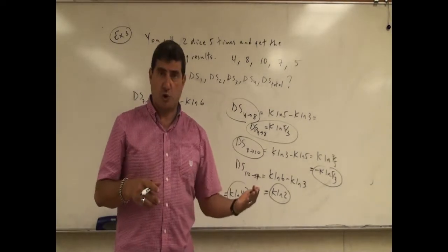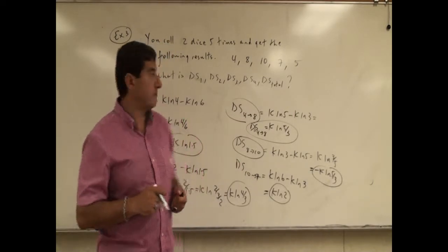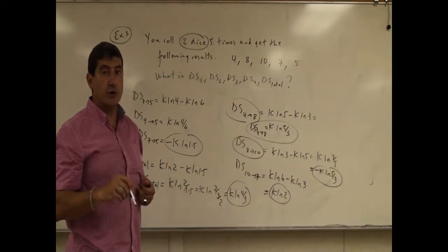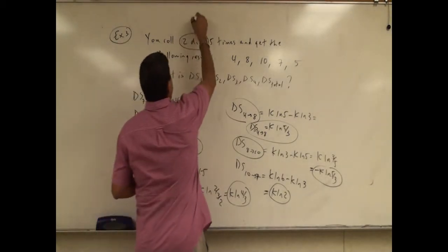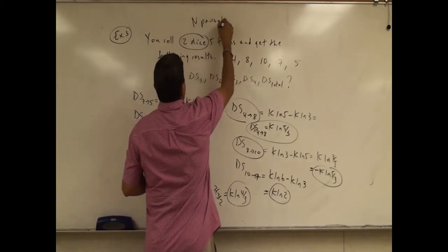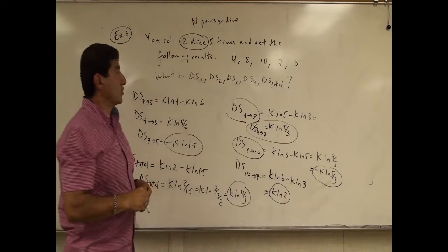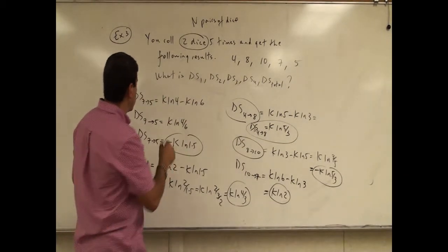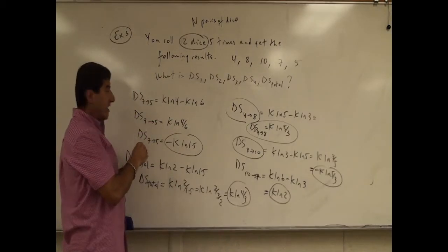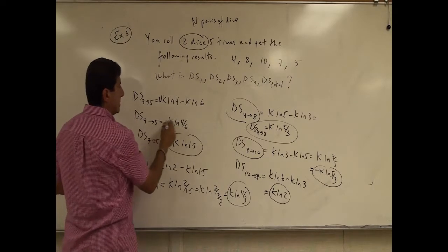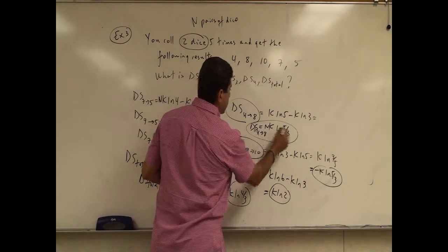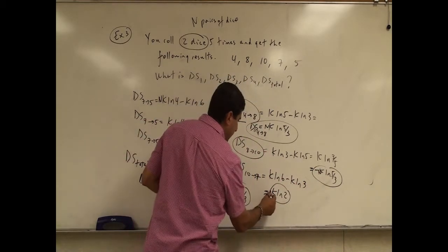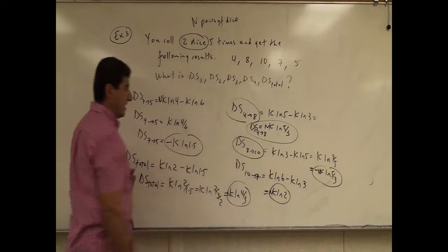It's also true that the more dice you roll, the more likely delta S is to be positive. Instead of rolling two dice five times, what if I roll n pairs of dice? Each time I multiply by n, so: nk·ln(5/3), negative nk·ln(5/3), nk·ln(2), and nk·ln(4/3).